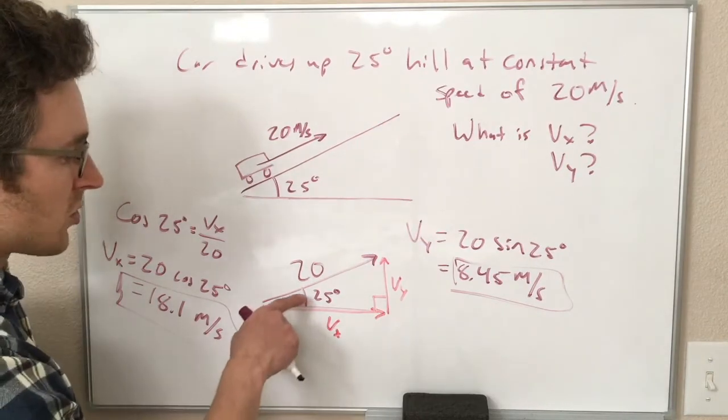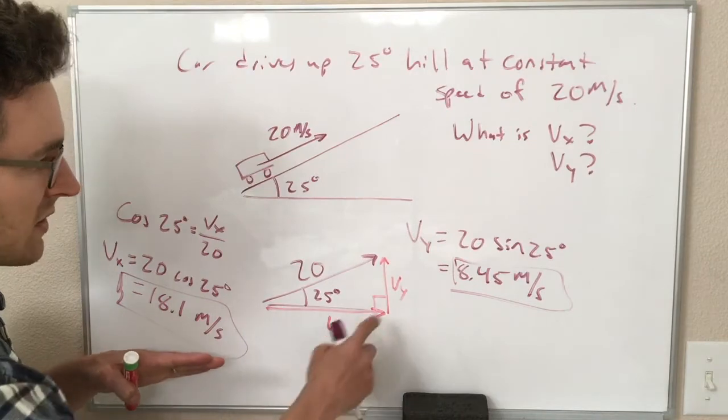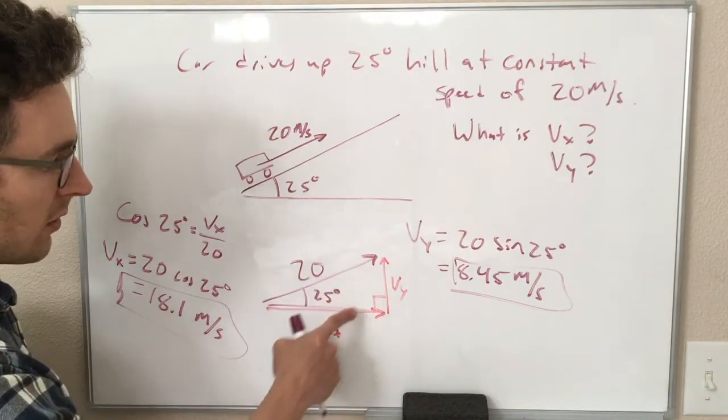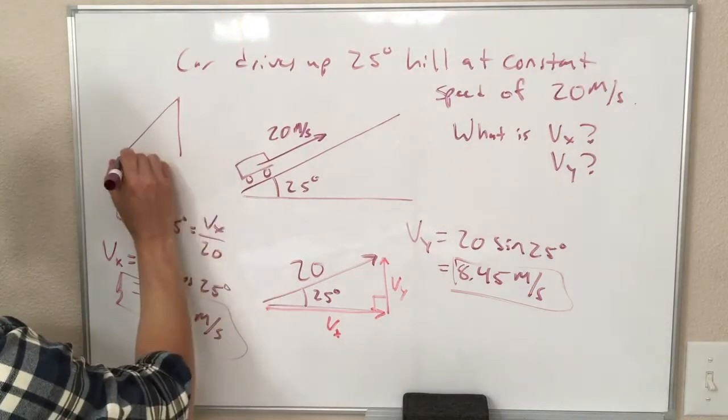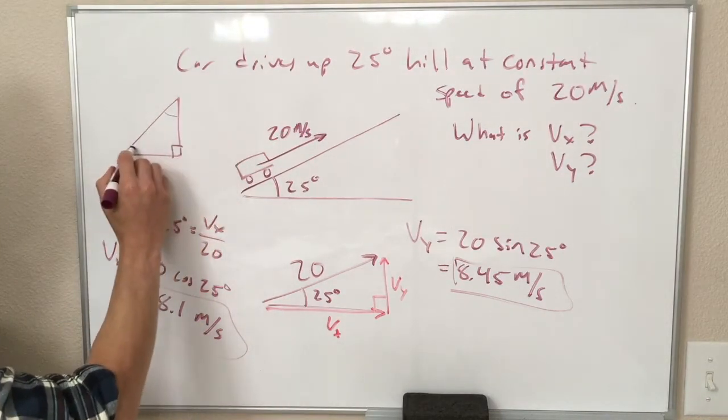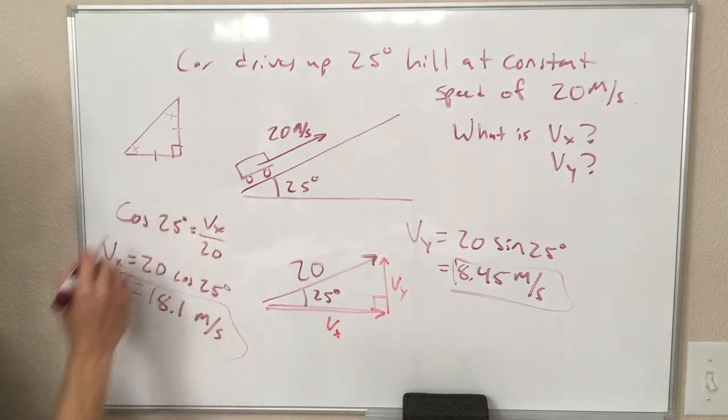And one other thing to check is we know 25 degrees is less than 45 degrees, which means this side should be smaller than this side. If it was a 45 degree angle, then we have a right isosceles triangle,